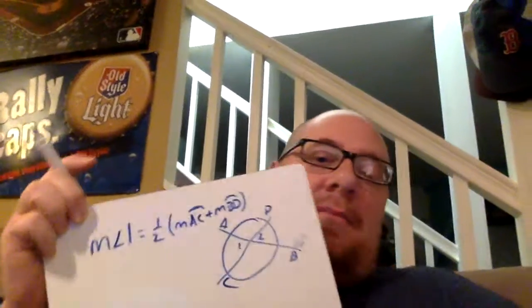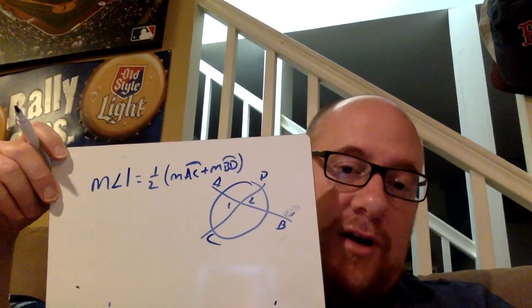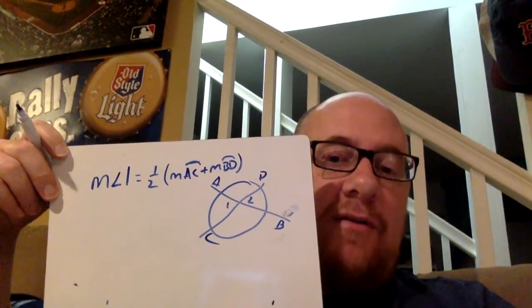If you look at theorem 10.12, if you want to find the measure of angle one — let's say we have a secant, and we have angles one and two — we know that it is one half of the measure of arc AC and arc BD. So if we wanted to find the measure of angle one, all we'd have to do is take one half of the arc. If we knew the measure of arc AC and the measure of arc BD, we would take half of the sum of those.